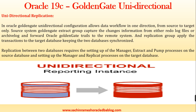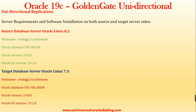Oracle 19c GoldenGate unidirectional replication. In Oracle GoldenGate, unidirectional replication allows data to flow in one direction — from source to target only. The GoldenGate extract group captures change information from redo log files or archive logs and writes GoldenGate trail files to the remote system. The replication group then applies the transactions to the target database, keeping the two databases synchronized. This requires setting up the manager, extract, and pump processes on the source database, and the manager and replicate processes on the target database.